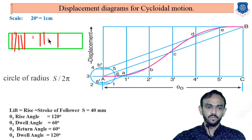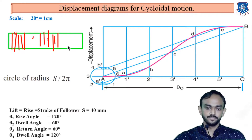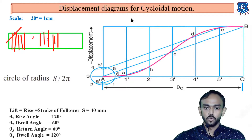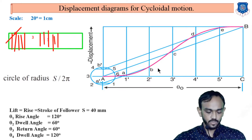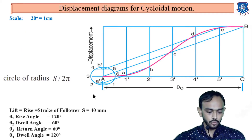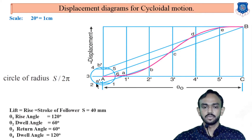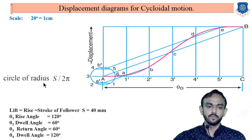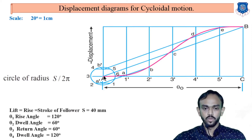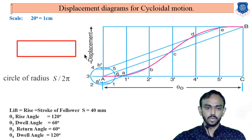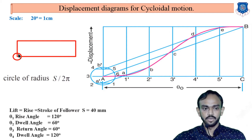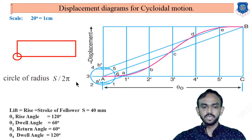The procedure up to this point is similar to the previous displacement diagrams, but for the rise section of cycloidal motion, you do something different. You make one circle at a corner of the rectangle, and the radius of this circle is equal to lift divided by 2π. At the center of the rise section, you draw a circle with radius r = lift / 2π.